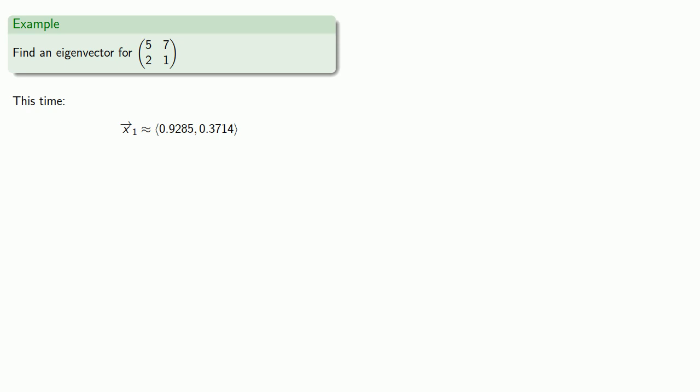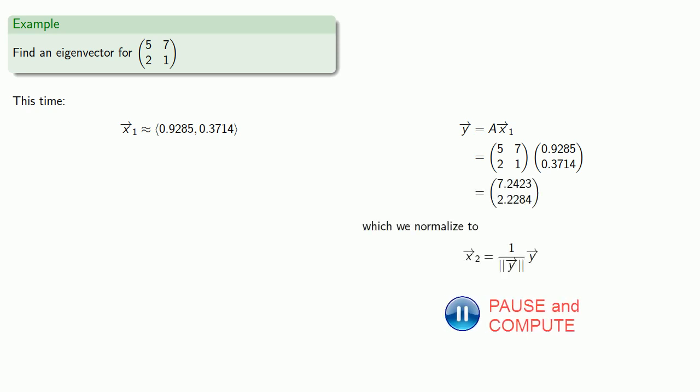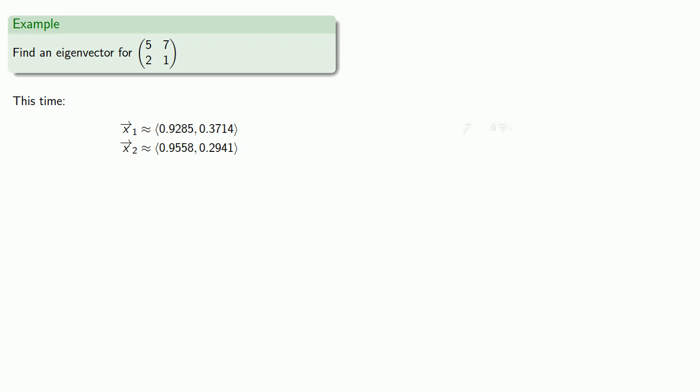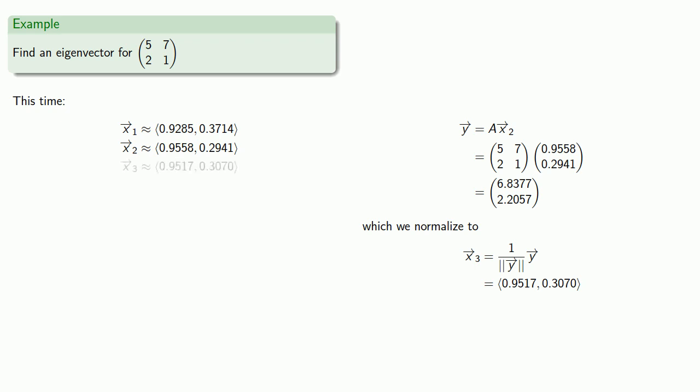So again, we'll apply A to x_1. Which gives us a new value of y, which we'll normalize to give us x_2. We'll apply A to x_2. Which gives us a new value for y, which we'll normalize to find x_3.